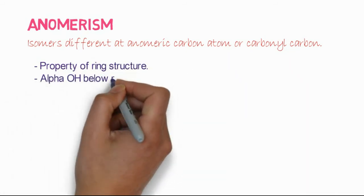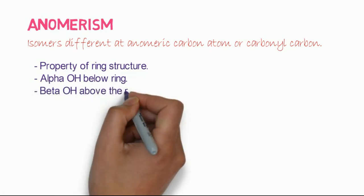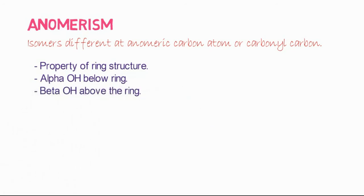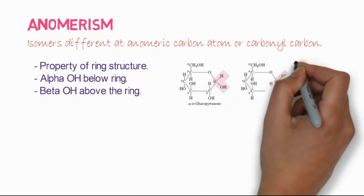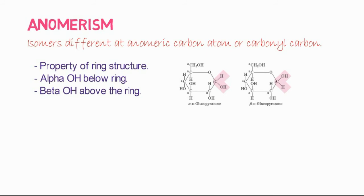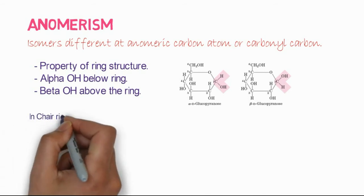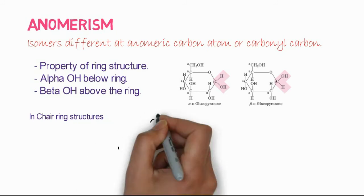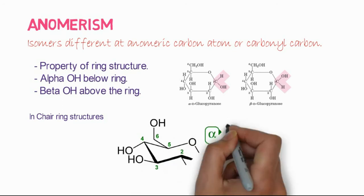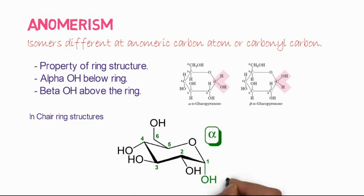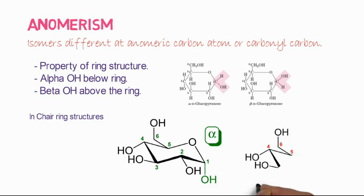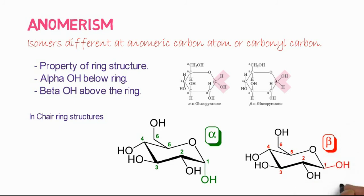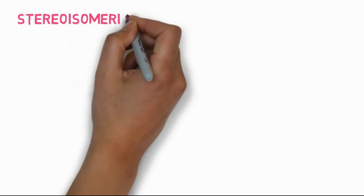Anomerism is a property of the ring structure. In the alpha anomer, the hydroxyl group is below the ring, while in the beta anomer, the hydroxyl group is above the ring. So: above the ring is beta, below is alpha. In the chair structure you can see the alpha hydroxyl is below the ring plane, while the beta hydroxyl is above the plane of the ring.